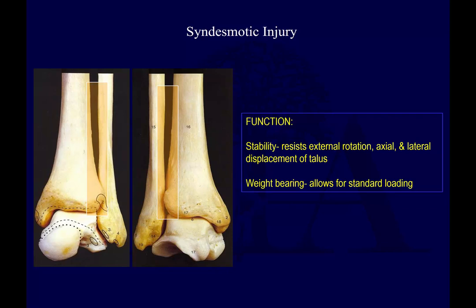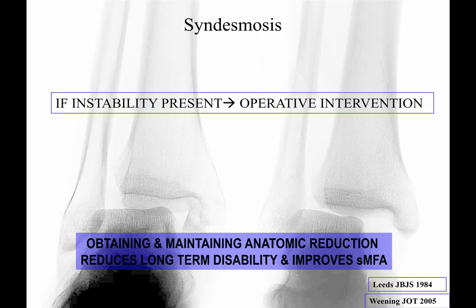Moving on now to syndesmotic injury. The function of the syndesmosis is to provide stability — it helps resist external rotation, axial and lateral displacement of the talus, and allows for standard loading with weight bearing. If instability is present, you have to consider operative intervention. The goal is obtaining and maintaining an anatomic reduction to reduce long-term disability and improve short-form musculoskeletal functional assessment, as shown in these papers. What exactly is anatomic is somewhat controversial due to variability, as you can see in these background images showing gross widening and increased medial clear space.